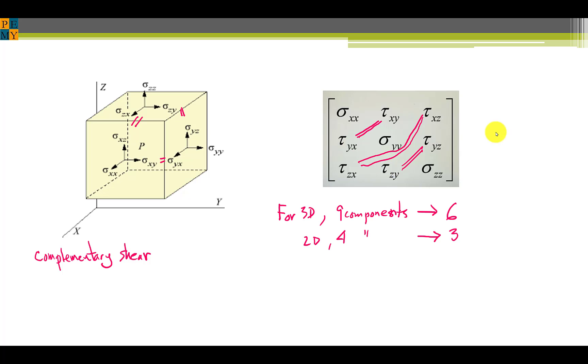We've reduced the nine stress components to six independent values, and for the plane stress model, the 2D model, we've reduced four components down to three. The plane stress element matrix is typically written this way.